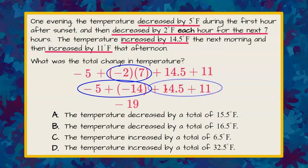Now we're going to add the two positive values. When we add with the same sign we keep the sign, and 14.5 plus 11 is going to be 25 and a half degrees.